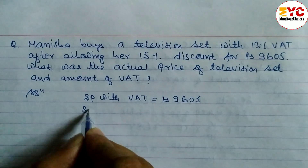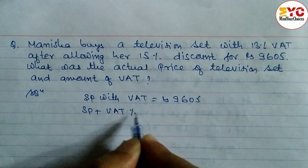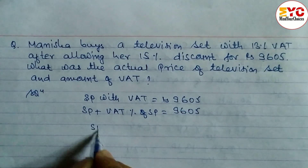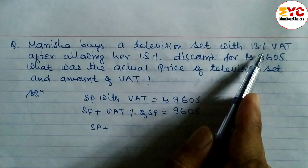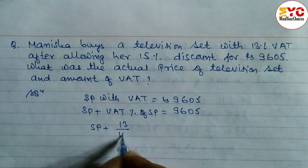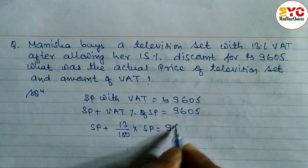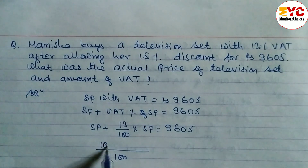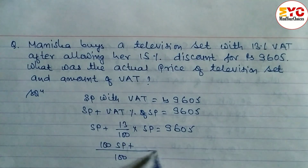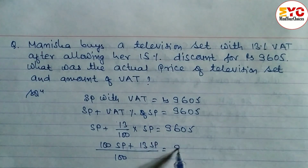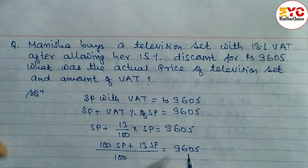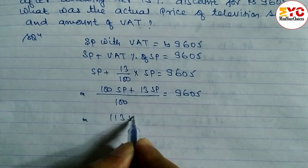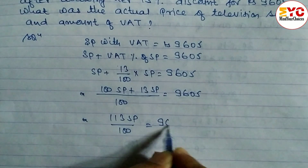The formula for SP with VAT: SP plus VAT percent of SP equals 9605. VAT percent is 13%, so: SP plus 13 divided by 100 into SP equals 9605. Taking LCM of 100: 100 SP plus 13 SP divided by 100 equals 9605. Adding: 113 SP divided by 100 equals 9605.